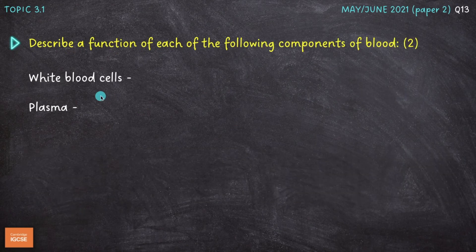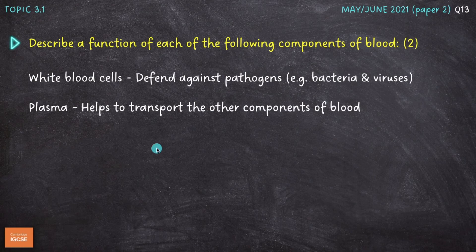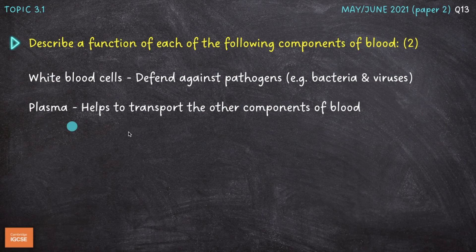The next question is to describe a function of each of the following components of blood for two marks: white blood cells and plasma. White blood cells defend against pathogens like bacteria and viruses, whereas plasma helps to transport the other components of blood, as it's the liquid component. It helps the blood to flow, transporting components of blood, nutrients, gases, etc.